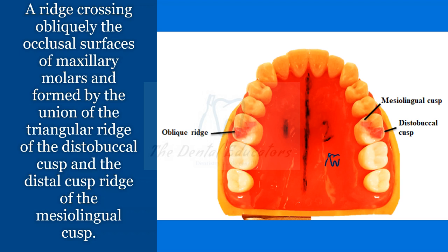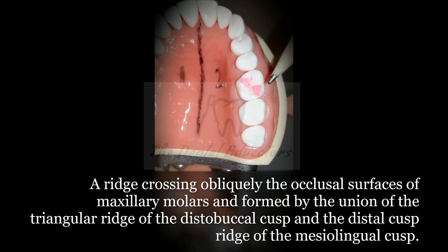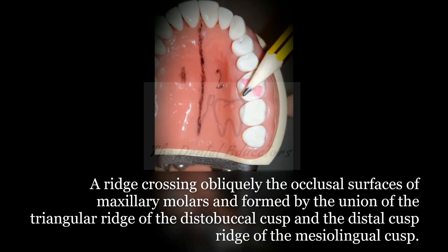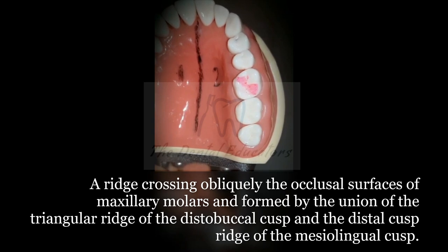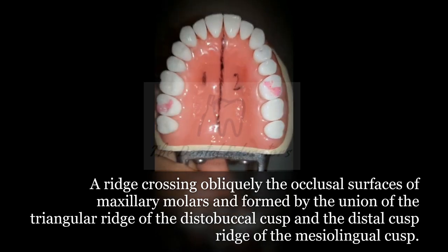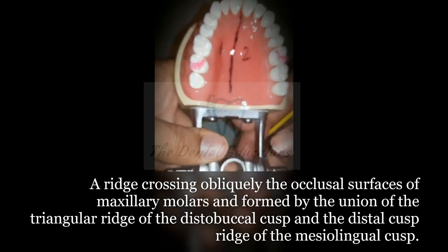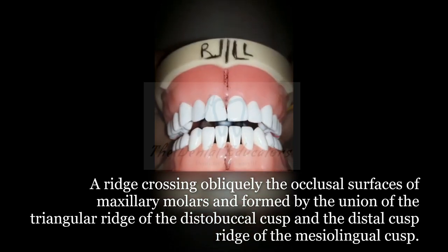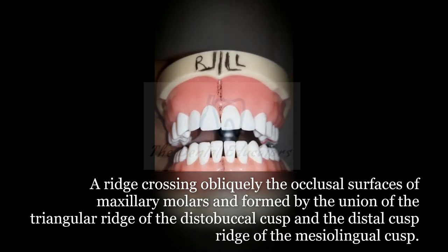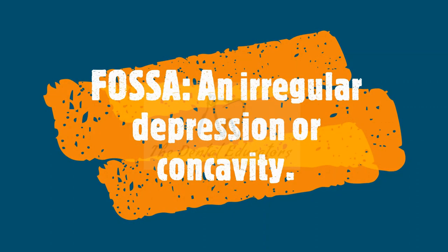The oblique ridge crosses obliquely the occlusal surface of maxillary molars, formed by the union of the triangular ridge of the distobuccal cusp and the distal cusp ridge of the mesiolingual cusp. The oblique ridge is most prominent and clearly evident in the maxillary first molar.